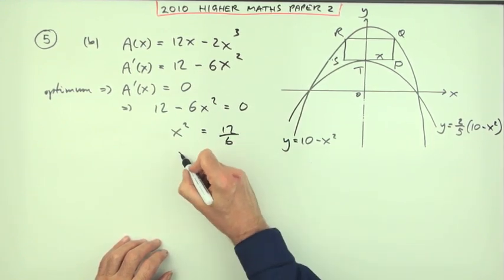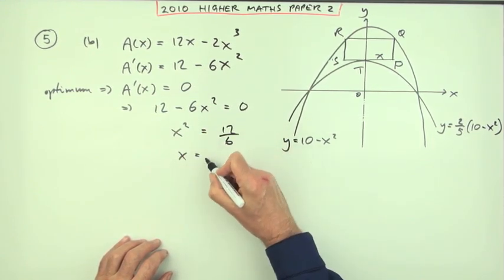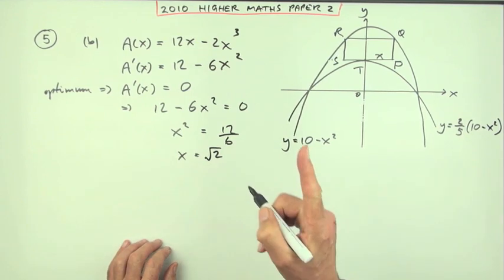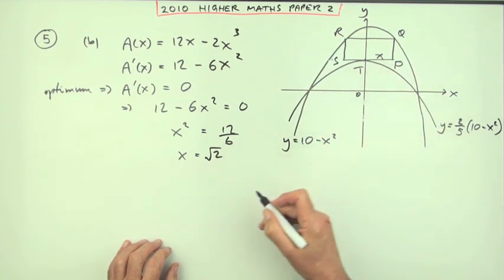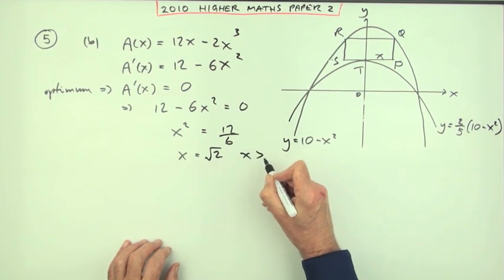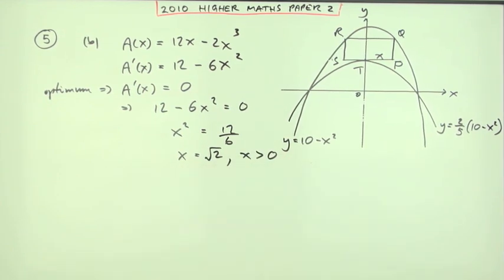And then finally take the square root of that 2. So the answer's going to be root 2, plus or minus root 2. But since x is positive, it'll be x equals root 2. But put a note, since x is greater than 0.